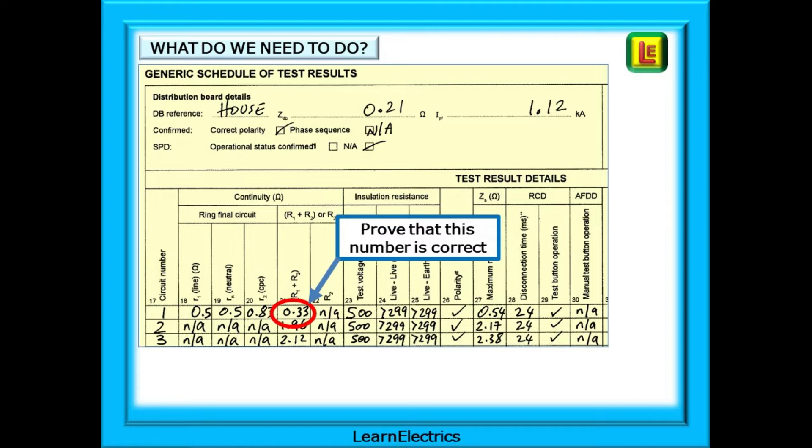What is it that we need to do? We want to prove that this number, 0.33 ohms, is correct for the values that we've recorded for the line, neutral and CPC end-to-end resistances. Many of us would call the CPC the Earth, but in an assessment, don't do this.